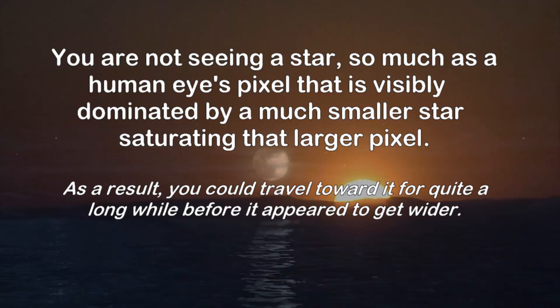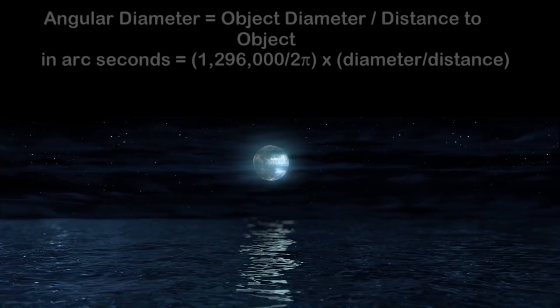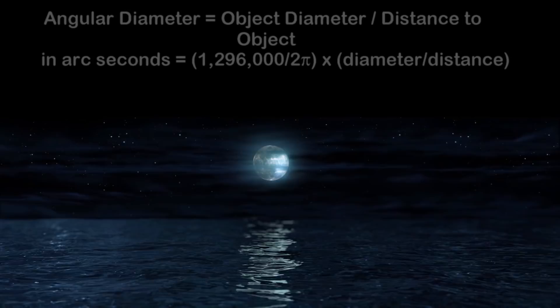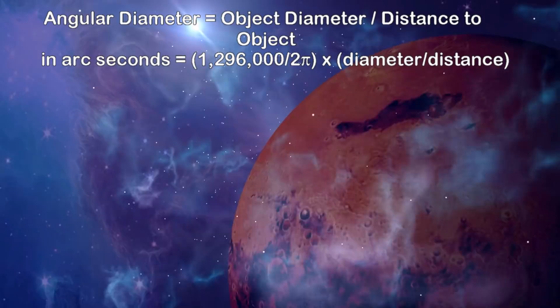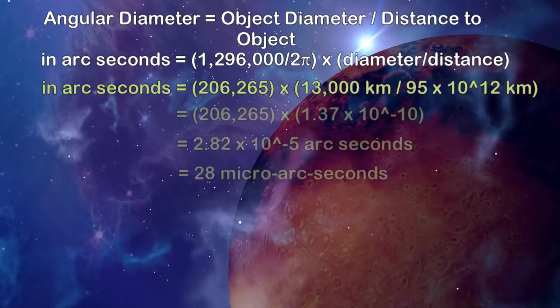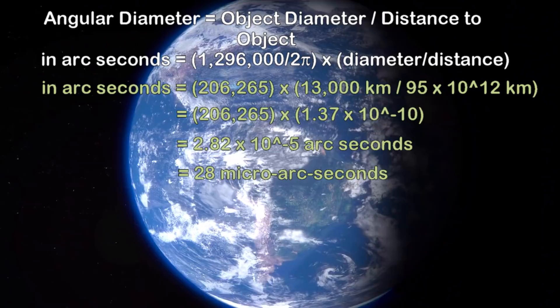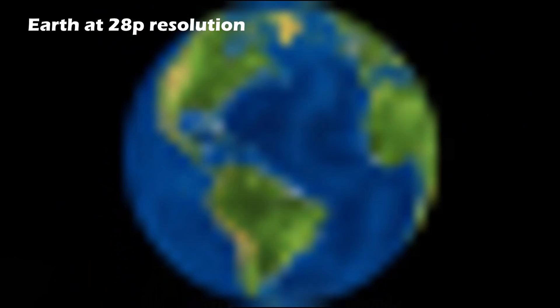If we had an Earth-like exoplanet 10 light-years away, one about 13,000 kilometers in diameter and a distance of 95 trillion kilometers, it has an angular diameter of just 28 micro-arc seconds. So if you wanted a picture of just 28 by 28 pixels, one micro-arc second each, able to see blue and green light enough to make out the existence of continents and oceans, where each pixel is 500 kilometers across, you would need a telescope lens over a hundred kilometers across.